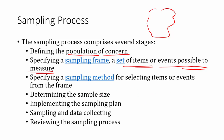You determine the sample size, which typically happens at the same time as you decide upon the sampling method. Then you implement the method and collect data. Finally, you review the sampling process to ensure that it is error free. These are the steps you follow in the sampling process.